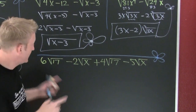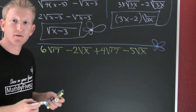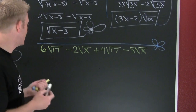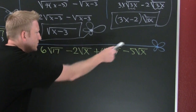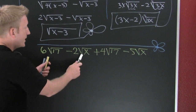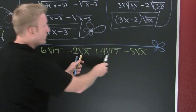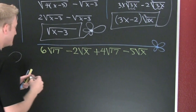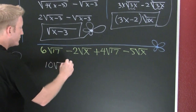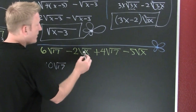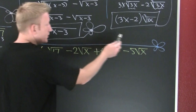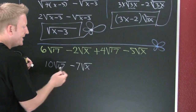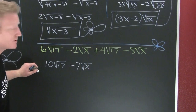Down here, like radicals are radicals with exactly the same index and the same radicand. I have four terms. Can I combine the first two? No. Can I combine the next pair? No. Can I combine these? No. Can I combine these? Yes — they're both root 17, so four and six give me ten roots of 17. And I have minus two roots of x minus another five roots of x, which gives minus seven roots of x. I can't combine those two groups because they're not like radicals.